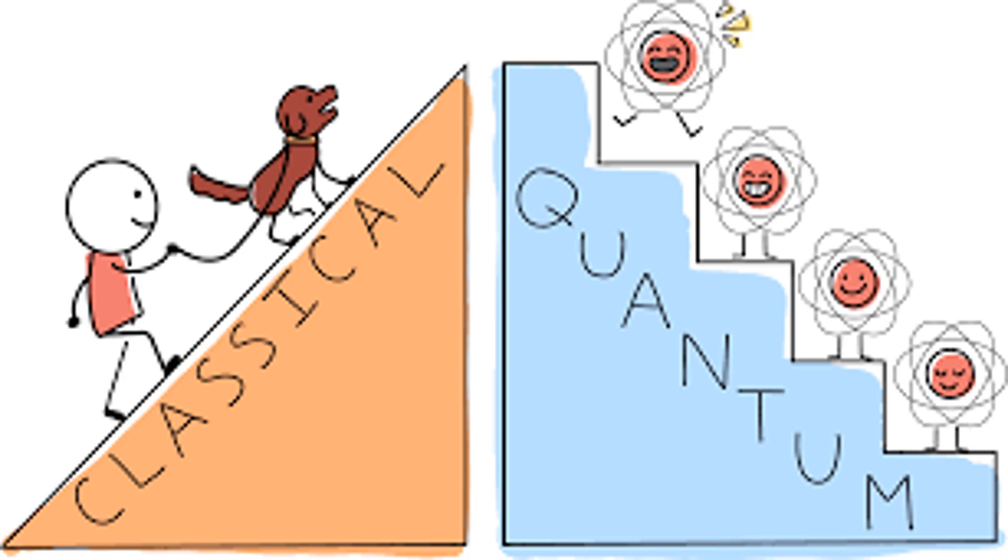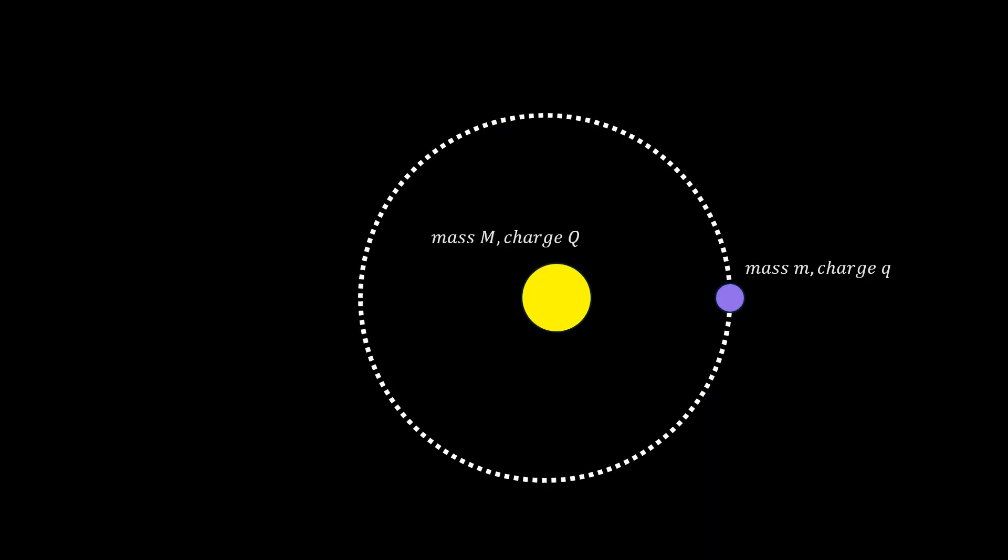Imagine you are in deep space with nothing else in your nearest vicinity but two small objects, one substantially smaller than the other and orbiting the larger one in a circle. You have no idea of the nature of these objects. Given key knowledge in physics, what will you say constitutes the centripetal force here? Is it just gravity, or just electromagnetism, or both?